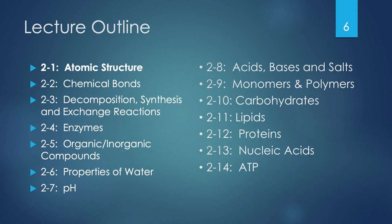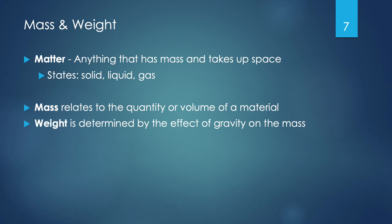In today's lecture, we're going to start with Chapter 2, Section 1: Atomic Structure. So first, let's talk about mass, weight, and matter. Matter is really anything at all that has mass and takes up space. Matter can exist in a number of different states: solid, liquid, or gaseous. If we think of something simple like water — water in solid state is ice, water in liquid state is water as we drink or use for bathing, and water in gaseous form is mist or humidity. It can be in any of those three states but is still fundamentally the same thing.